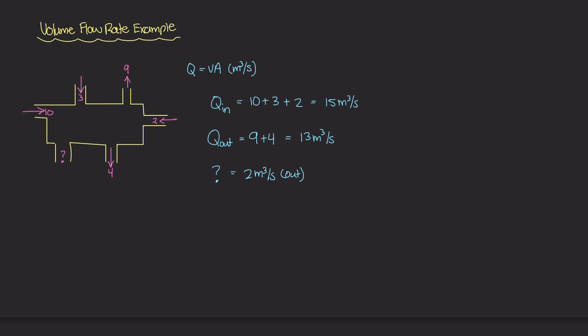Now the whole system is balanced. We have Q in as 15 meters cubed per second, and Q out now also becomes 15 meters cubed per second — that's 13 plus 2. So this unmarked tube has a value of 2 meters cubed per second coming out.